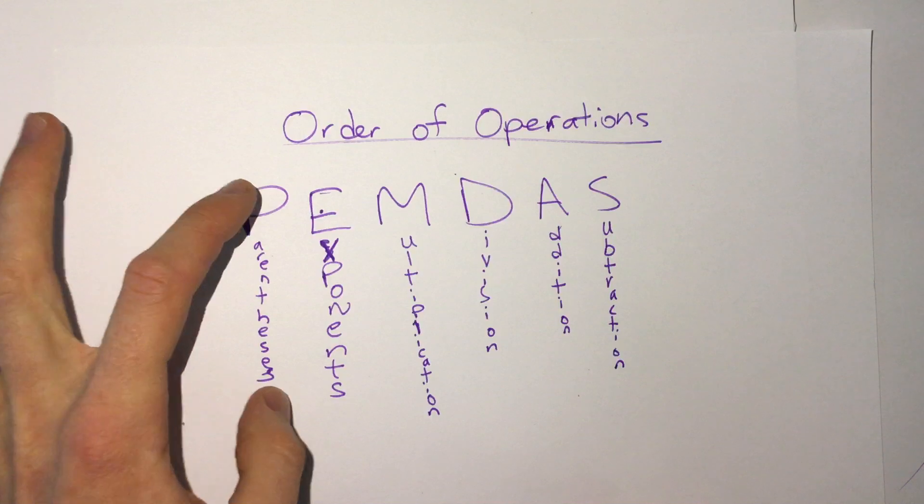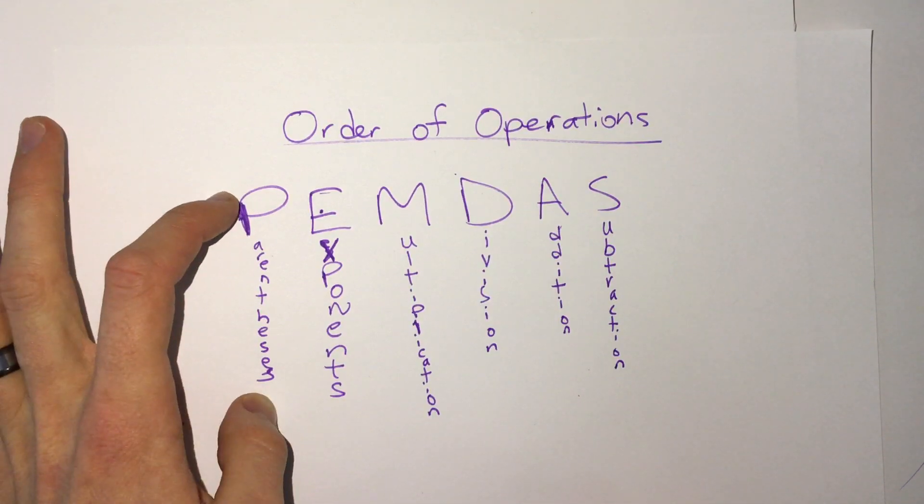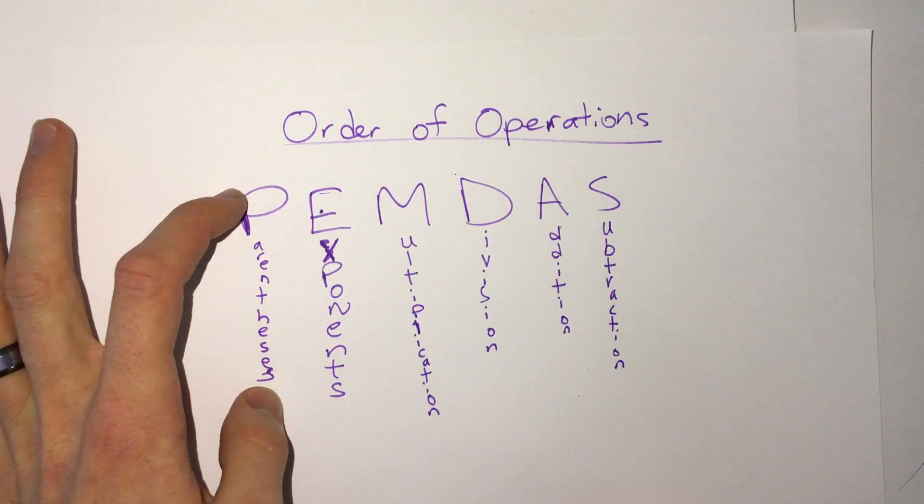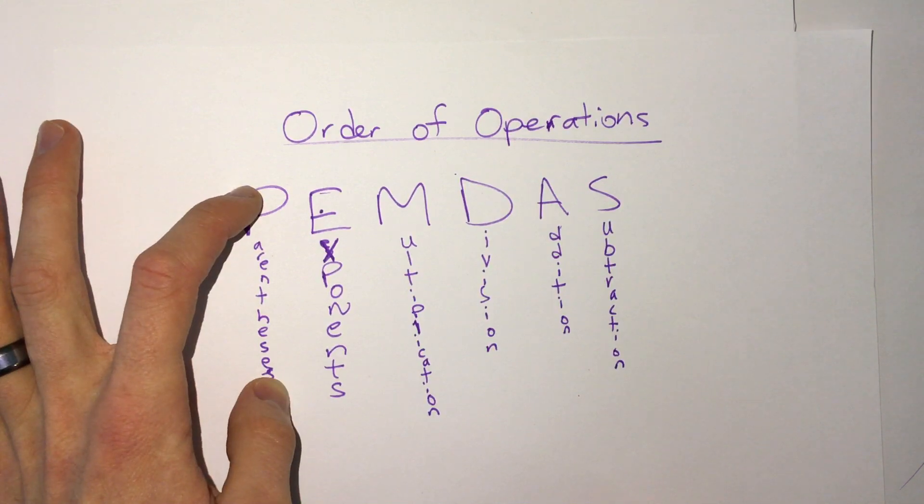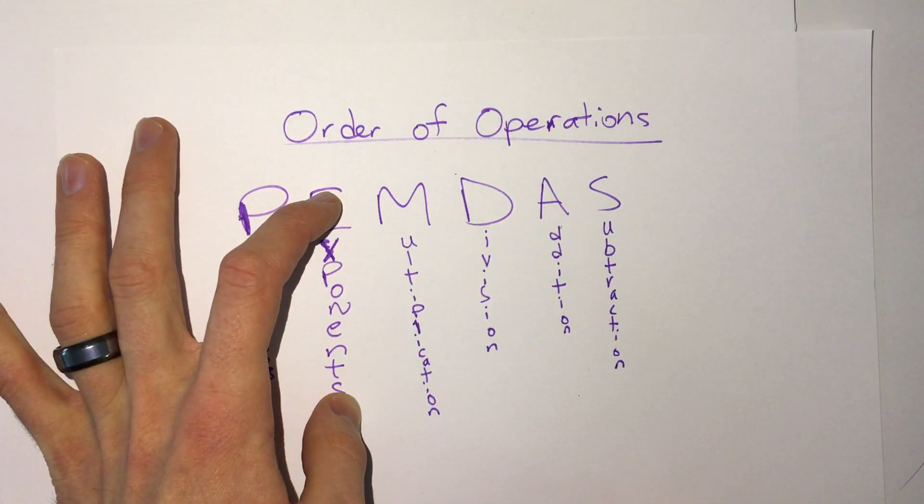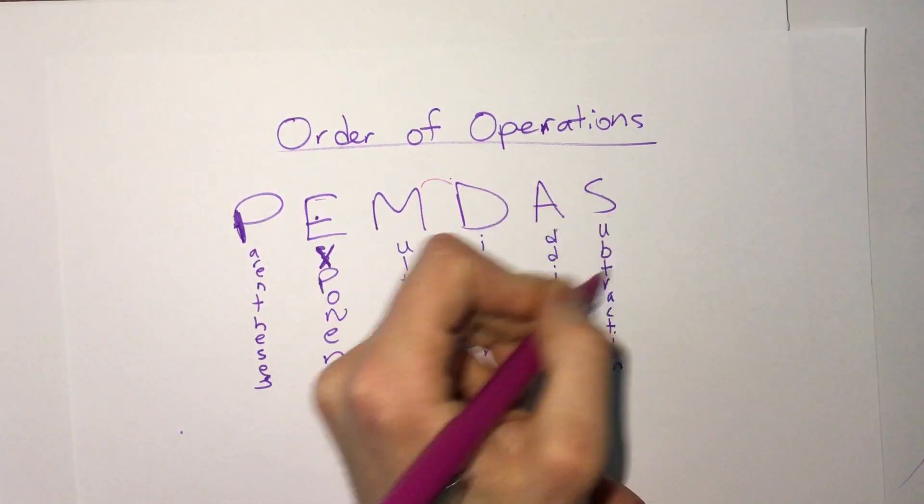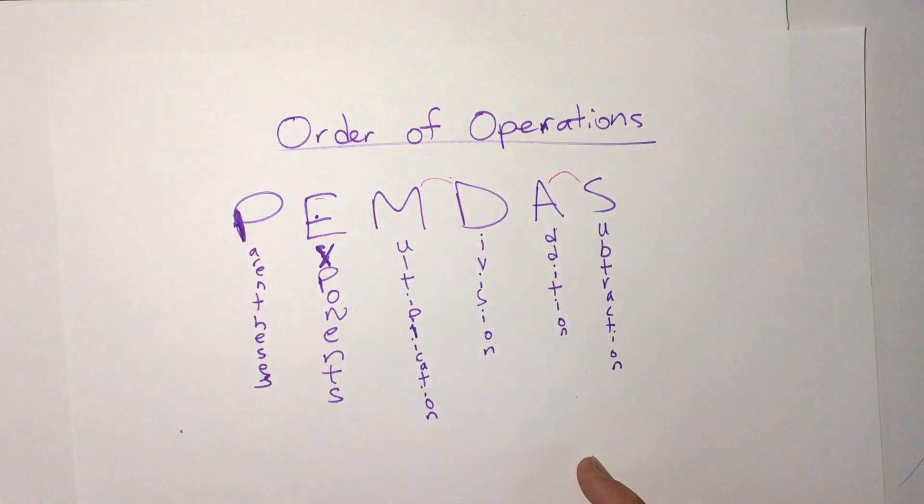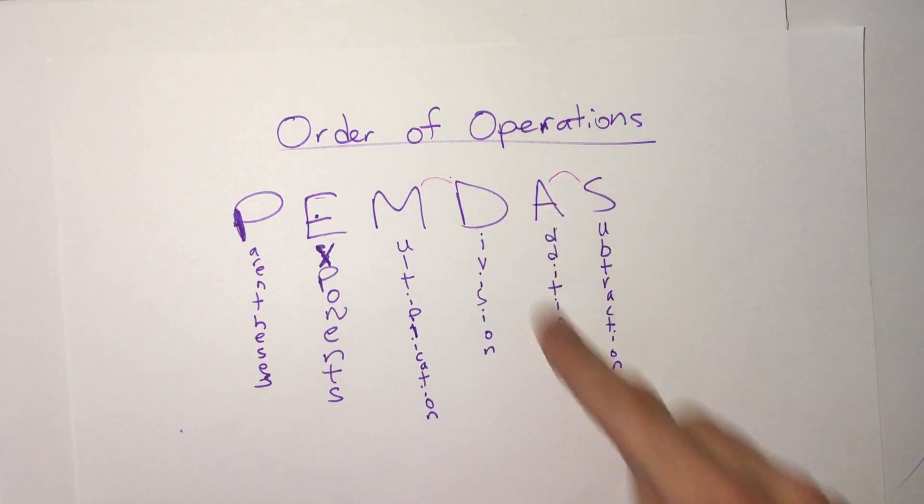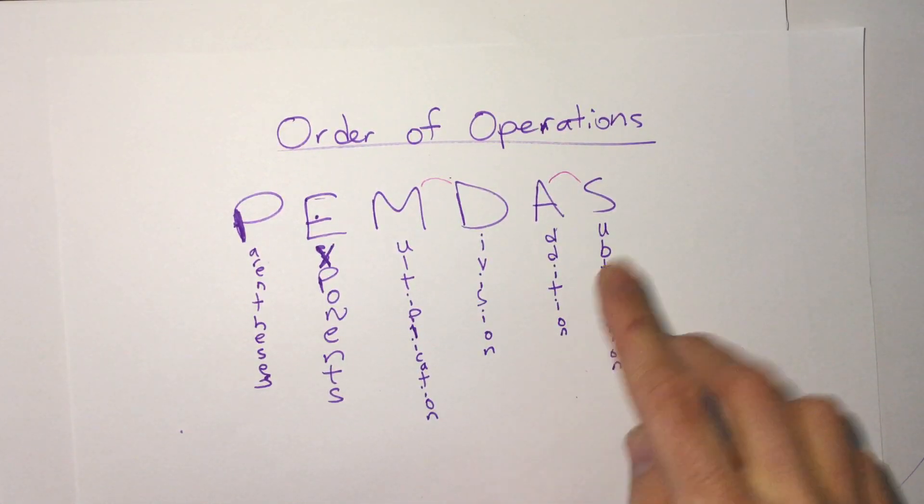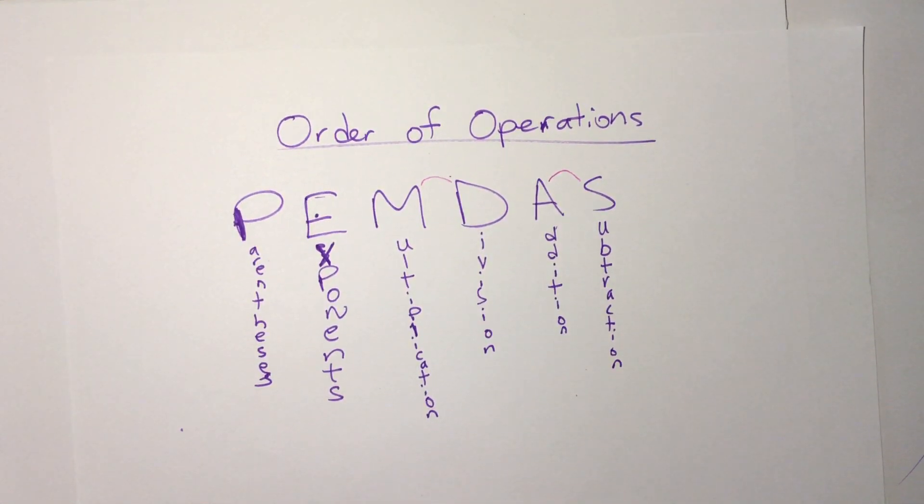And what that means is as we go through things we first find any parentheses or grouped fractions and simplify that, then do any exponents, then together do multiplication and division from left to right, and then last there should only be addition and subtraction. And remember it doesn't have an order, you just go left to right doing addition and subtraction.